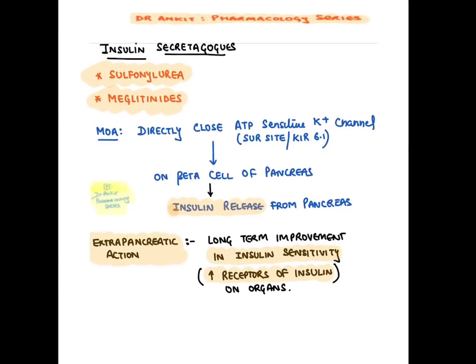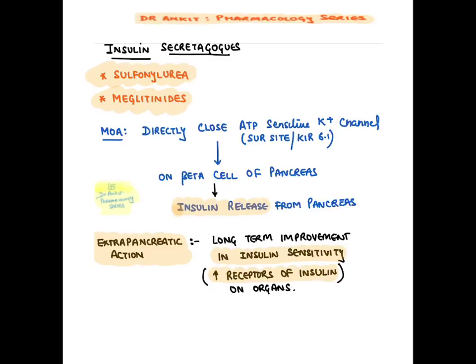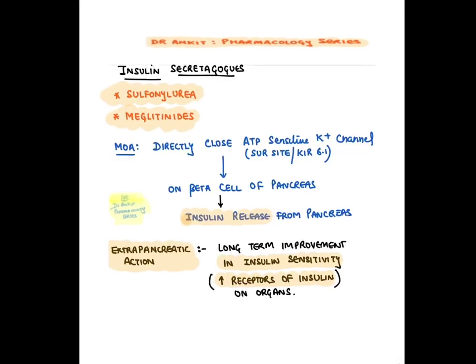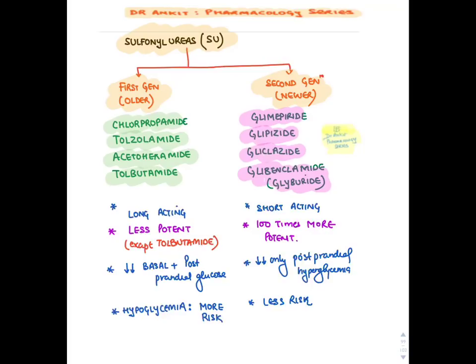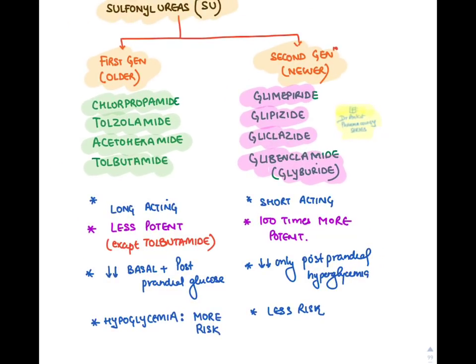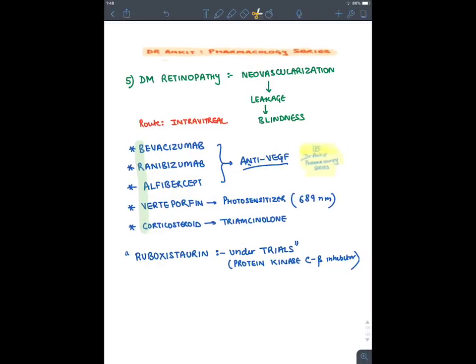Sulfonylurea and meglitinides directly go to the beta cells of pancreas and close ATP-sensitive potassium channels, leading to insulin release. They also have extra-pancreatic action — improving insulin sensitivity and increasing insulin receptors on other organs long-term. First-generation sulfonylurea end with the word 'amide' (e.g., chlorpropamide, tolbutamide). Second-generation sulfonylurea start with 'gli' — like glimepiride, glipizide, gliclazide.